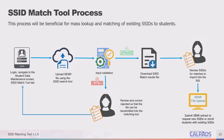If the blank SSID file passes all validations and is approved, a downloadable SSID match results file will be available to you. Once you download that file, you will have to review the SSIDs for matches and then import those SSIDs into your student information system. Upon initial implementation, importing that file won't be possible automatically, so you will have to update your student information system manually. Once you have SSIDs for students that have matches, extract a new SENR file from your SIS to include those newly matched students and go to the file upload screen.